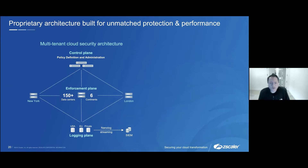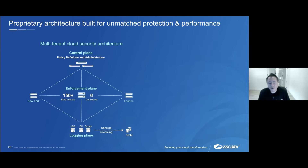We had the luxury of doing a clean-slate architecture where we basically said we're going to come up with three planes to our architecture and then build them ourselves. You don't have the luxury of building an architecture like this if you're trying to retrofit a single-tenant appliance version and virtualize it. We went so clean-slate that we literally went to the OS level — we designed the TCP/IP stack from scratch, wrote our own TCP stack, and built multi-tenancy in at that level.